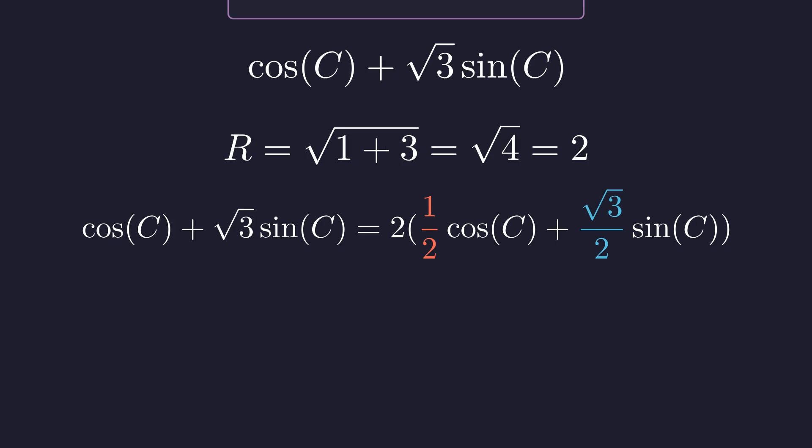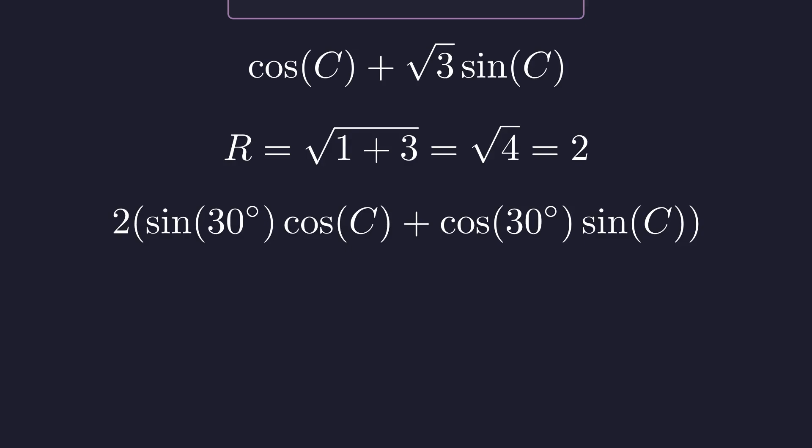These are the classic 30-60-90 triangle ratios. Substituting these values reveals an incredibly familiar pattern. This is exactly the sine angle addition formula: sine of A cosine of B plus cosine of A sine of B equals sine of A plus B. So our entire expression collapses beautifully into 2 times sine of C plus 30 degrees. All that complexity reduced to this elegant form.